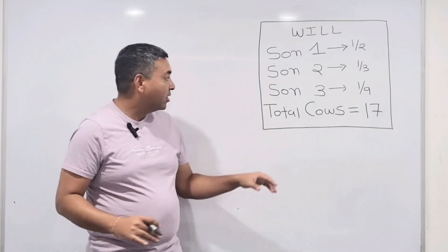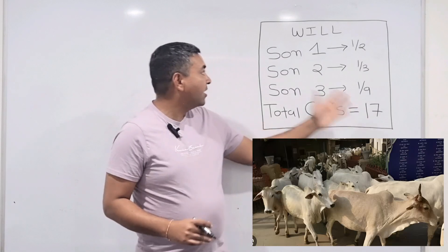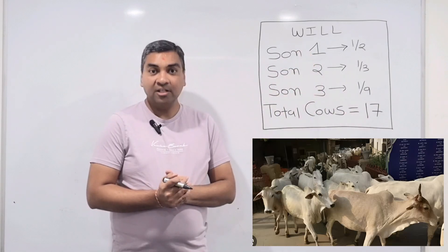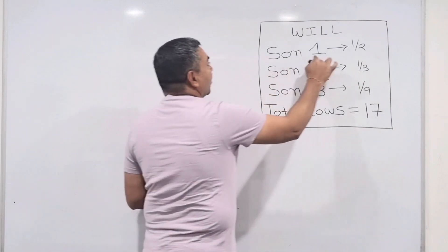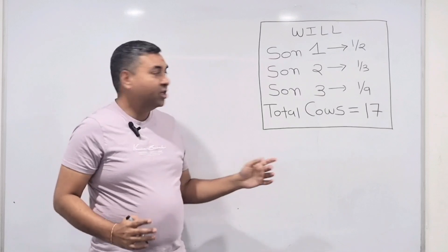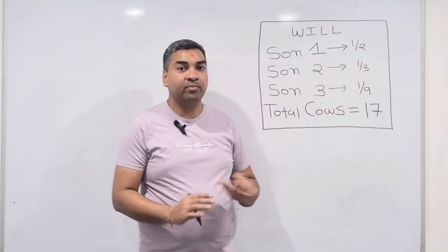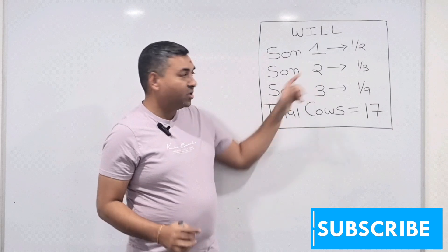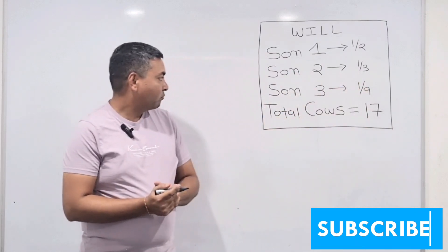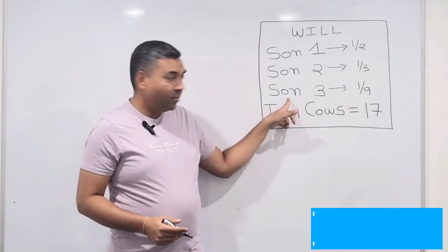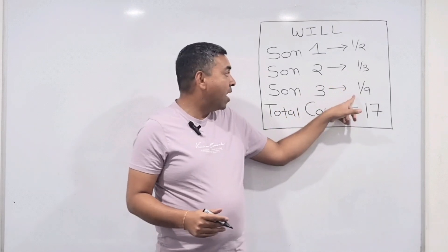He has written in the will: son number one, who is the oldest one, should be getting one half of the cows. Son number two, the middle one, will be getting one third of the cows. And the youngest one will be getting the least, which is one ninth of the cows.